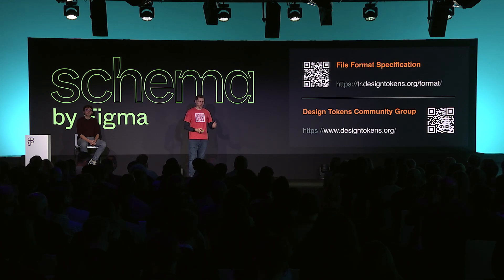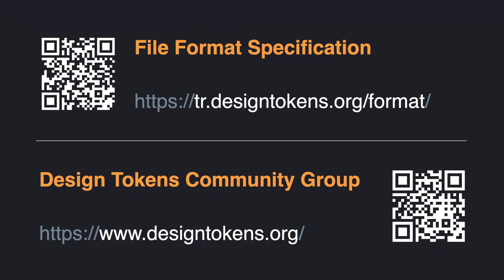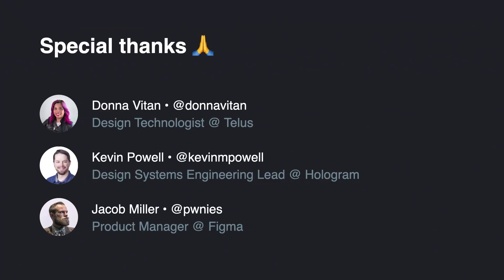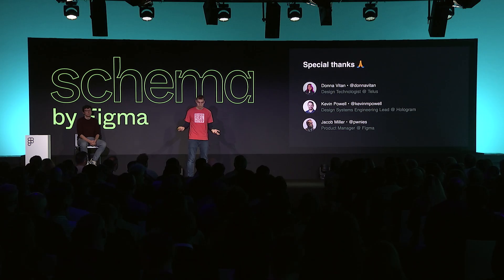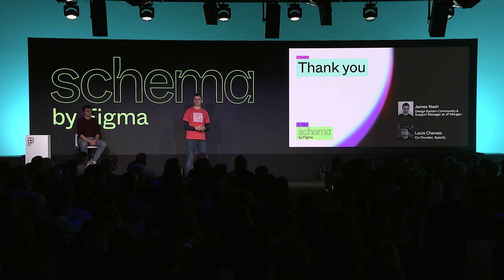The first link takes you to the specification itself — it's quite a technical document, but hopefully not too scary. The second link is our Design Tokens Community Group website, where you can subscribe to our Twitter or RSS feed and be the first to know when we reach version 1. Special thanks to our fellow format editors Donna and Kevin, who helped us put this presentation together, and also to Jake from Figma for reviewing our slides. Thank you all for listening — we really can't wait to see what you do with our format.